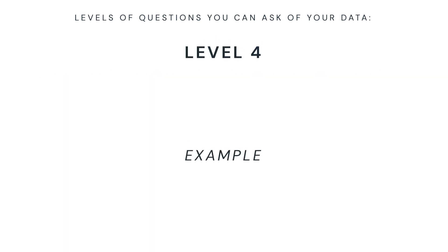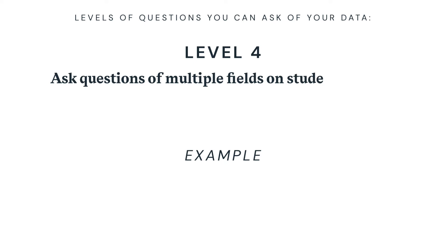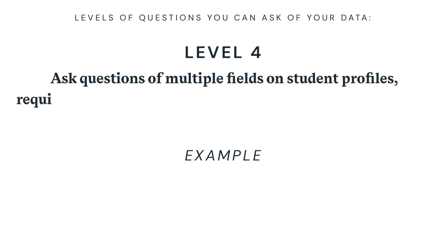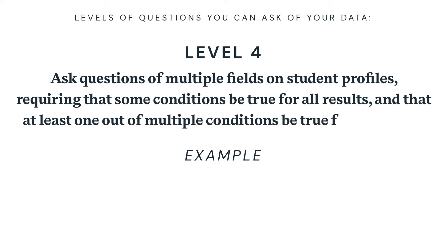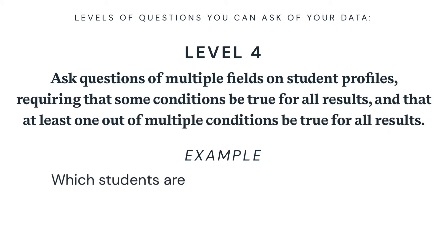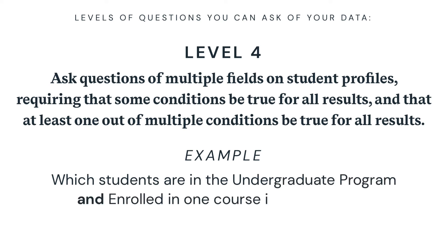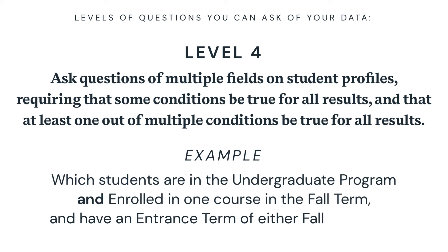Level four lets you ask questions of multiple fields on student profiles, requiring that some conditions be true for all results and that at least one out of multiple conditions be true for all results. For example, which students are in the undergraduate program and enrolled in one course in the fall term, and have an entrance term of either fall or spring?